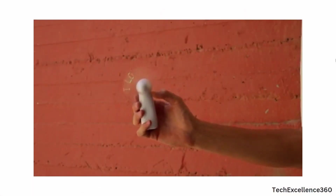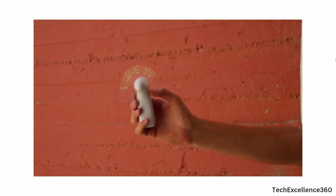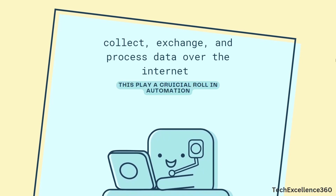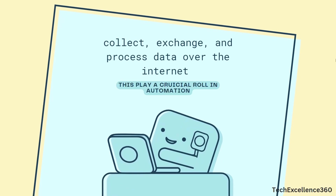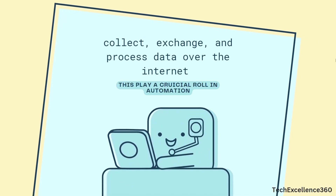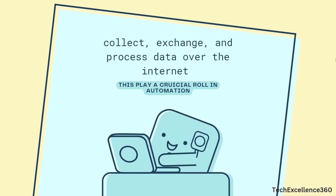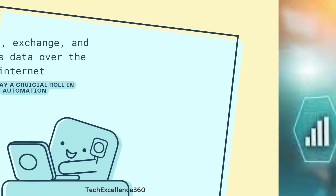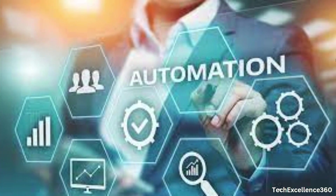IoT devices are physical objects embedded with sensors, software, and connectivity features that enable them to collect, exchange, and process data over the internet. These devices can range from everyday objects like thermostats and light bulbs to complex systems like industrial sensors and smart vehicles. They play a crucial role in automating tasks, improving efficiency, and enabling remote monitoring and control across various industries and daily life.